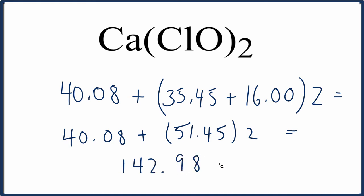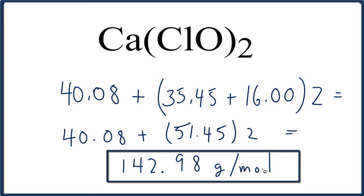And we need to put our units in here, grams per mole. You may get a slightly different number if your periodic table is rounded to a different number of decimal points, but this is the molar mass for Ca(ClO)₂ calcium hypochlorite.